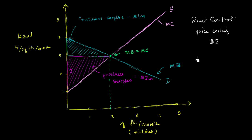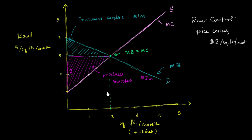So they set a price ceiling right over here at $2 per square foot per month. Given that, what is going to happen? What is going to be the new consumer surplus and the new producer surplus? I encourage you to pause the video and try to think about that on your own.